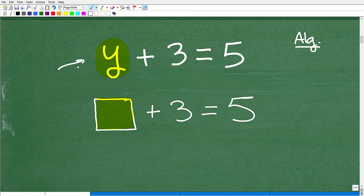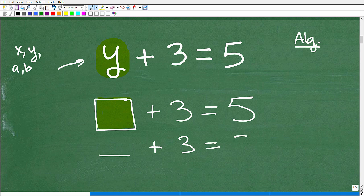Now in algebra, we use kind of nice variables like X and Y and A and B, but back in the second grade, you use you would use like a box or like a circle or something like that, or even like a little underline. This is another way you could do it, blank plus three is equal to five.